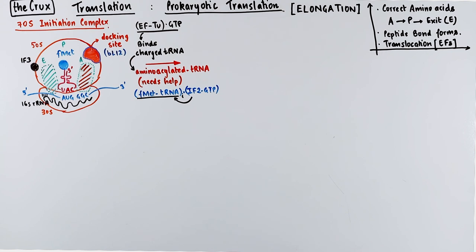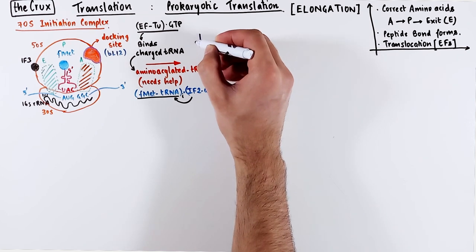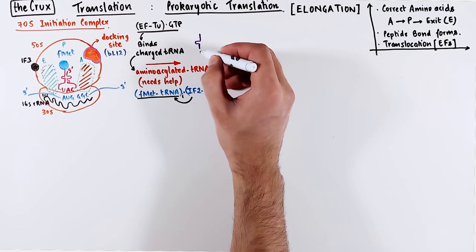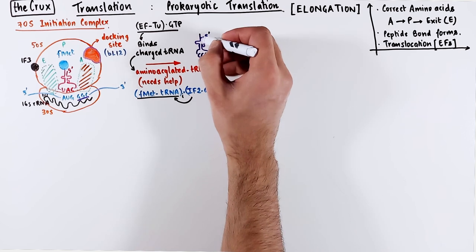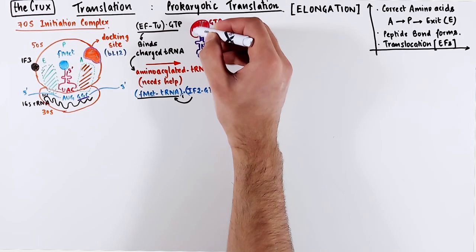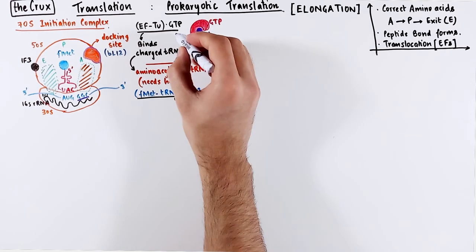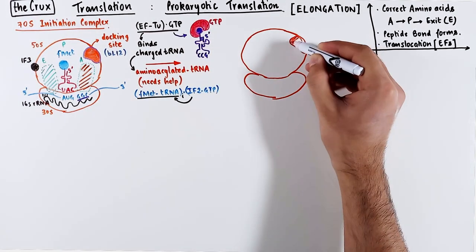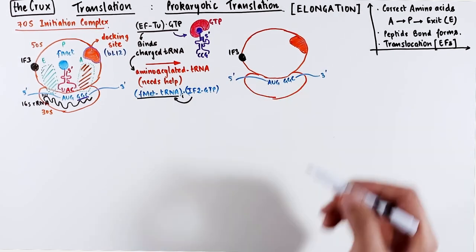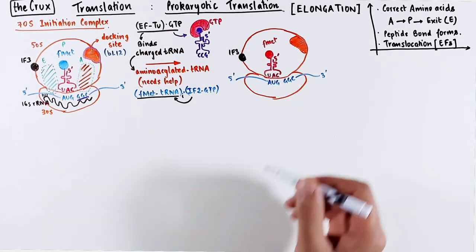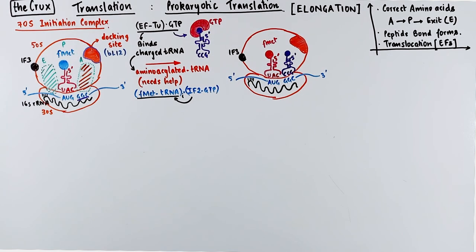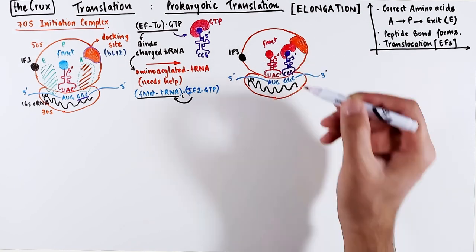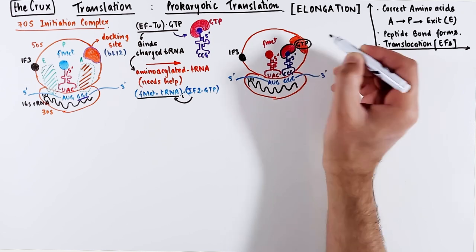The transfer RNA recruited at the A site must have anticodons that pair with the correct codons on the mRNA. EF-Tu specifically recognizes the 3' end of the charged transfer RNA. Once this transfer RNA is bound by EF-Tu, this charged tRNA is recruited at the A site in such a way that the elongation factor docks itself at the docking site, which is sometimes also called the factor binding region.